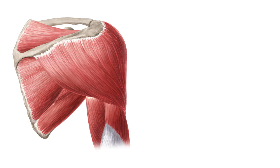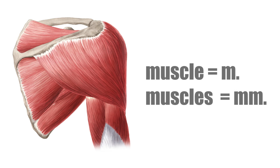We will start by discussing the abbreviations for anatomical structures, and then go over the ones for features. There are two things you should know up front: these are abbreviations for the Latin terms, and the plural form is just a repeated consonant. For example, the abbreviation for muscle is M, and for muscles is MM.